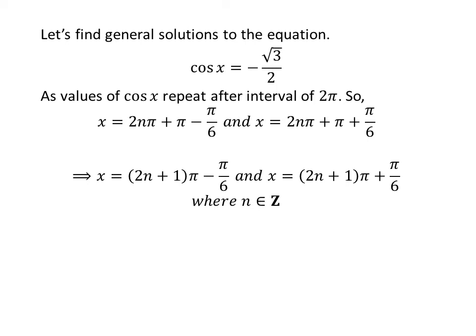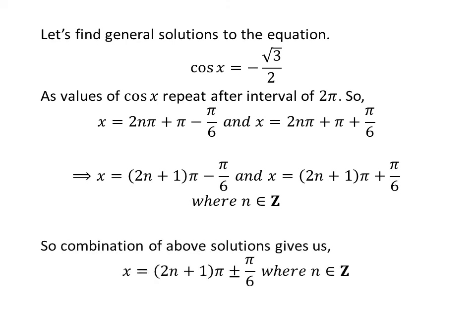Further simplification gives us the general solutions: 2 times n plus 1 times pi minus pi upon 6, and 2 times n plus 1 times pi plus pi upon 6. Combining these, the general solution of the equation is 2 times n plus 1 times pi plus or minus pi upon 6, where n is an integer.